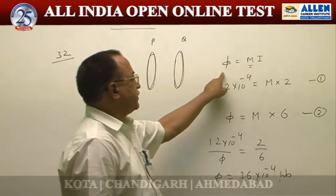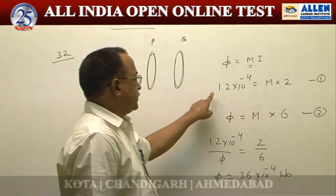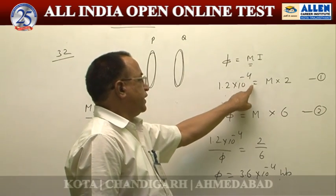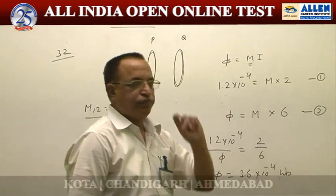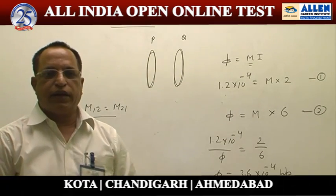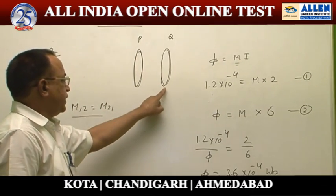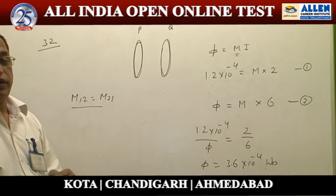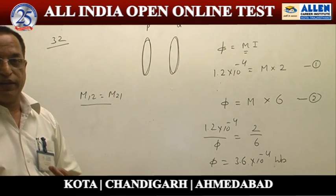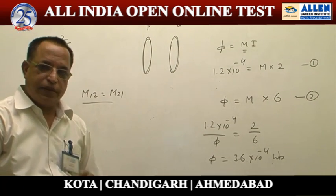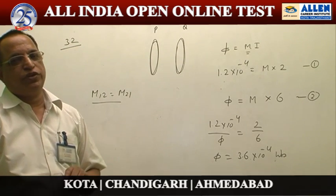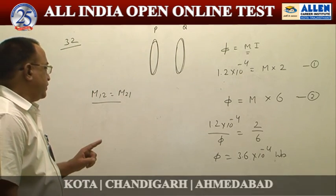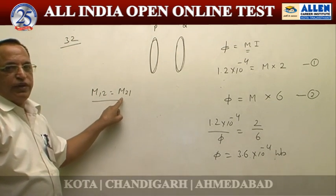We can use the relation φ = MI, which gives equation number 1: 1.2 × 10⁻⁴ = M × 2. Now, in the second case, they are giving current in coil Q and want to get flux in coil P. Though the coil in which we are giving current has changed, the coefficient of mutual inductance does not depend upon this fact, because from the theorem M12 = M21.